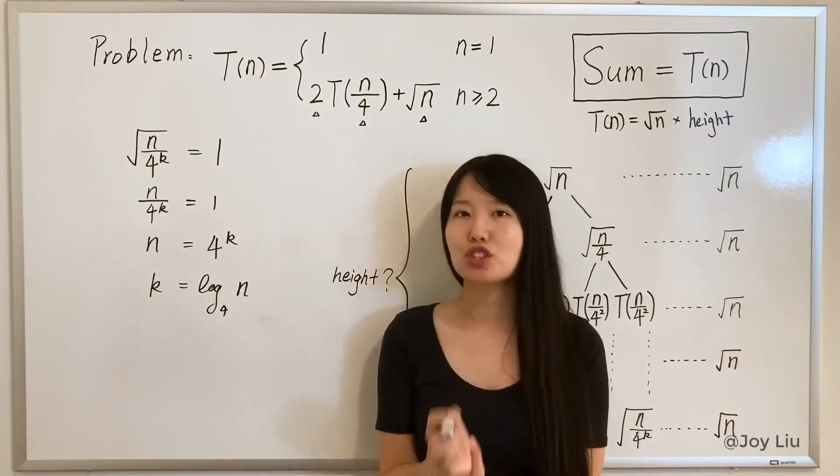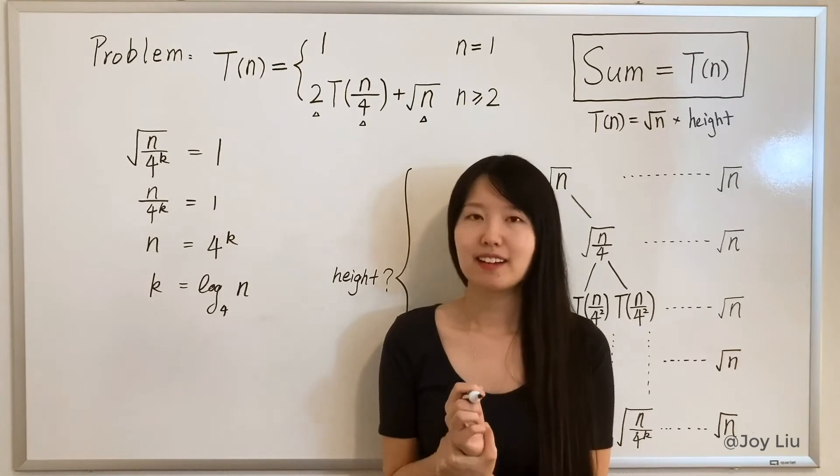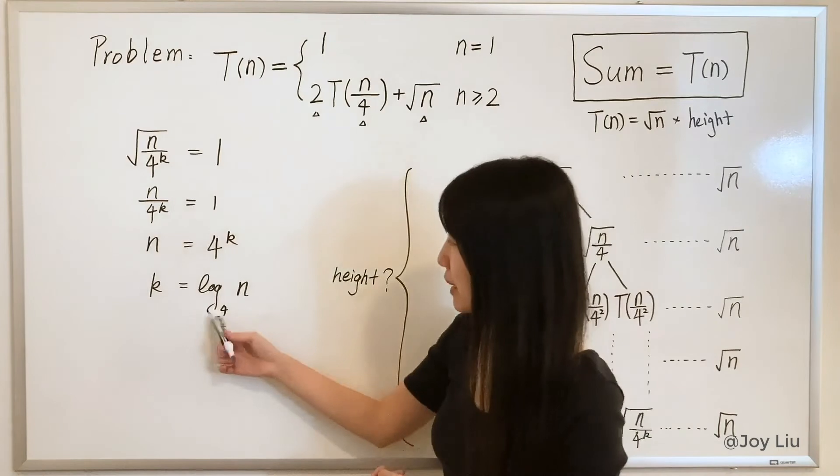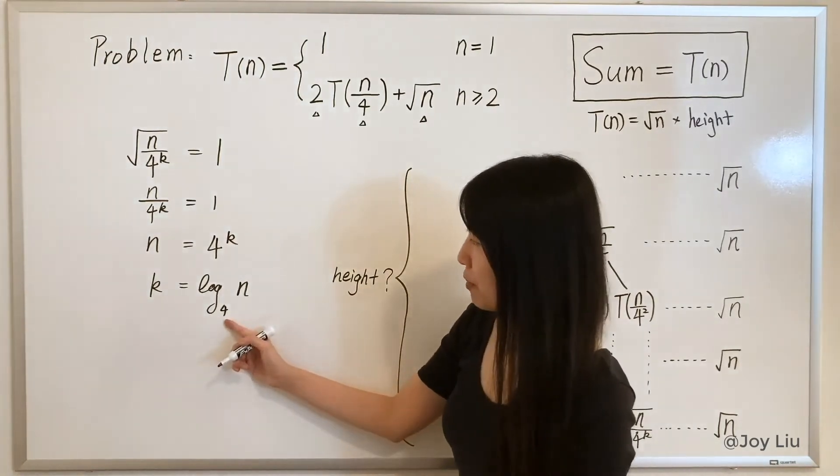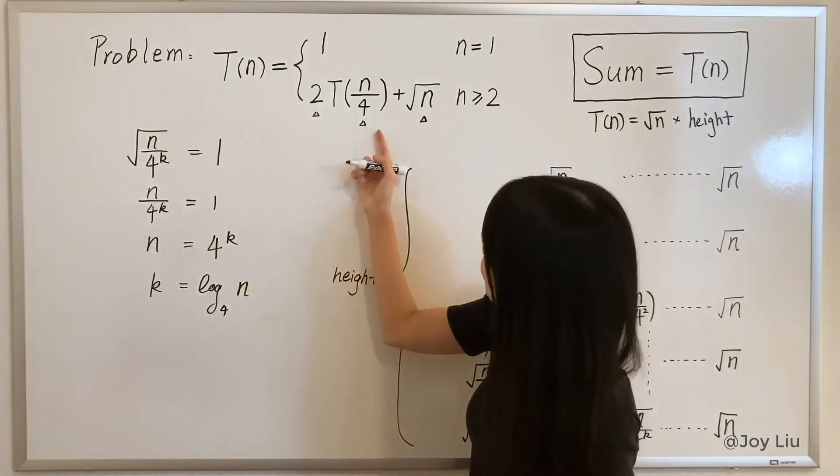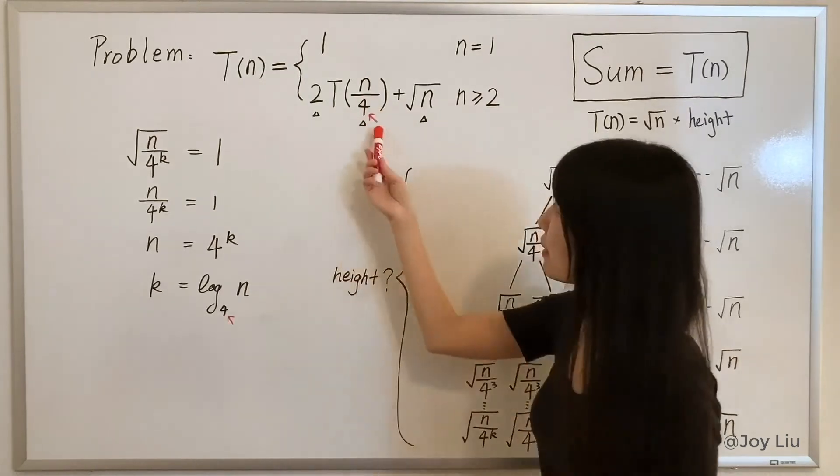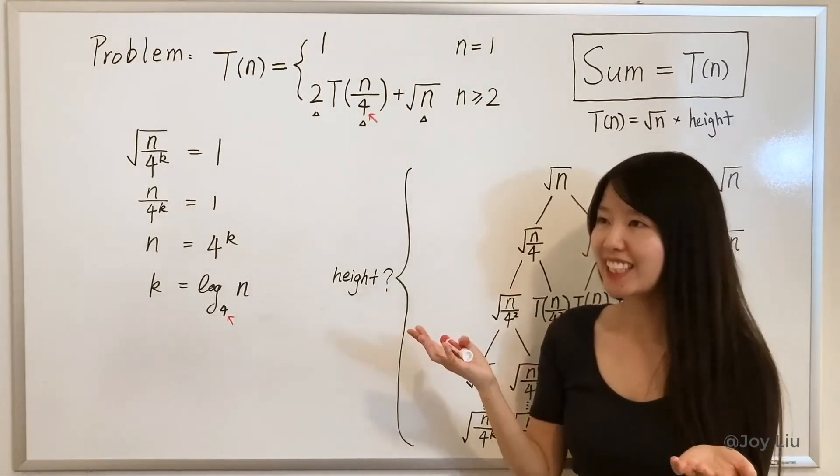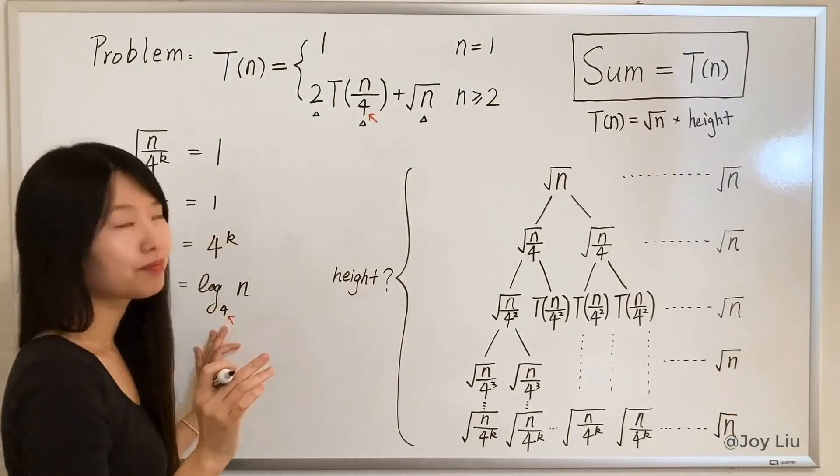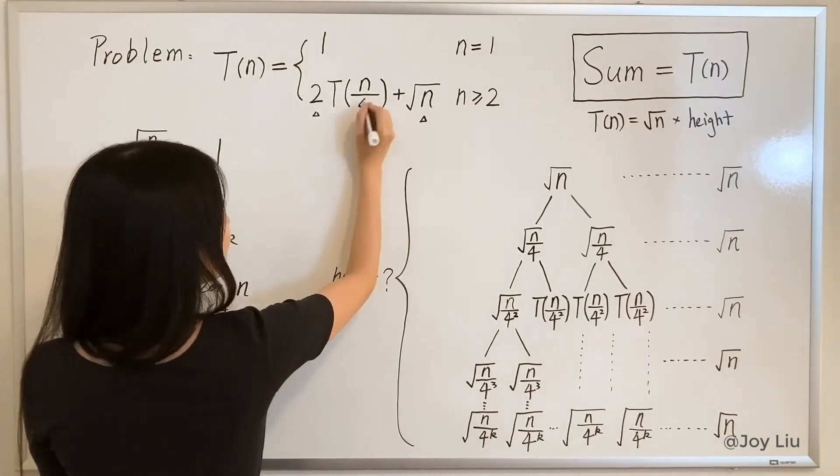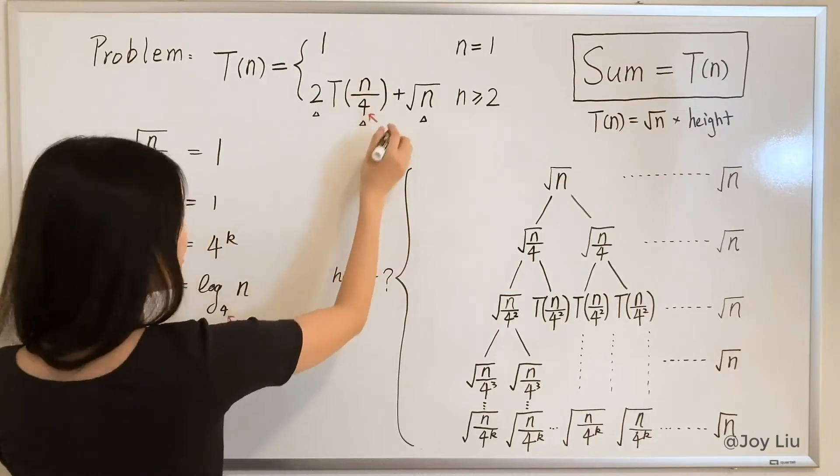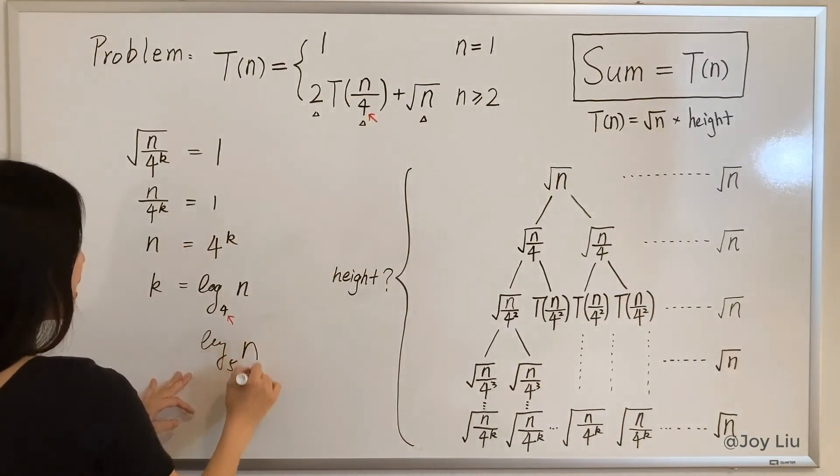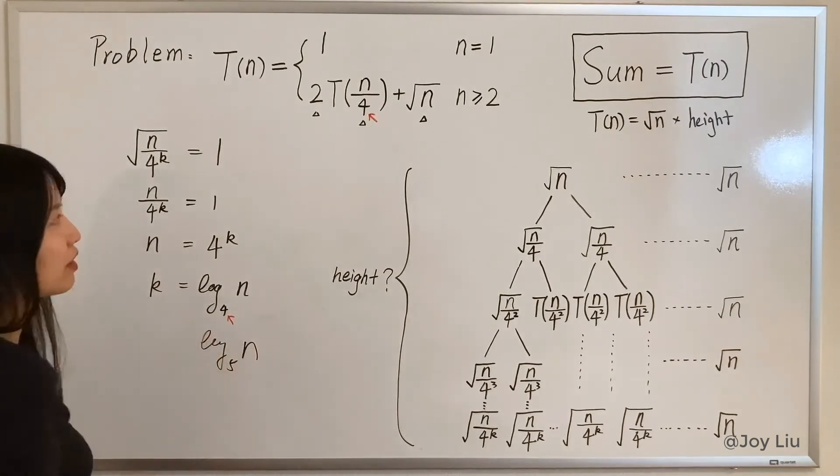Before that, I want to share a trick, how to get height in a faster way. So if you notice the base is 4. n over 4 to the K, this is exactly what we have here. Is this just a coincidence or is it destiny? It is not a coincidence. If we have 5 here, if n over 5, then it will be log base 5 of n. And if 6, it will be 6 because...